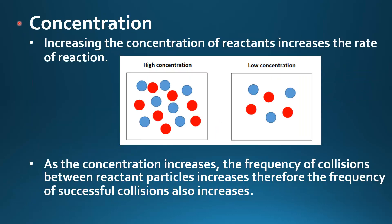Next is concentration. Increasing the concentration of reactants increases the rate of reaction. On the left we have a sample with a high concentration, so there are many particles and there's more chance of a successful collision between the particles. On the right we have a low concentration, so there are fewer particles and less chance of a successful collision. As the concentration increases, the frequency of collisions between reactant particles increases; therefore the frequency of successful collisions also increases, resulting in an increased rate of reaction.